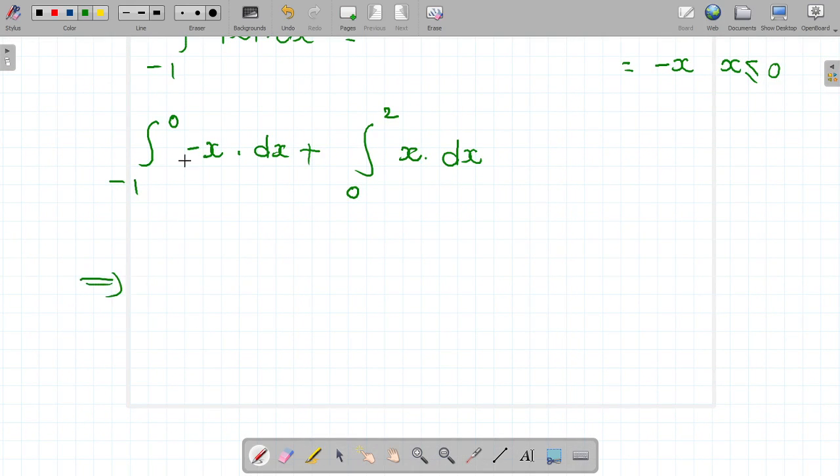The next step: integral minus x dx, take minus outside, minus 1 to 0 x dx plus integral 0 to 2 x dx. So x squared by 2, limits are minus 1 to 0.